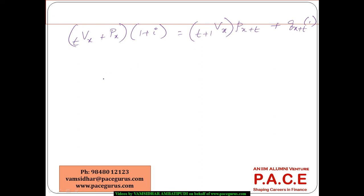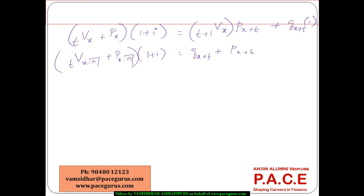This recursive relationship applies to almost all kinds of policies — endowment assurance, pure endowment, term assurance, and others. Once the reserve at the end of period T is known, we can comfortably compute the reserve expected at the end of T+1 without redoing the full first-principles calculation. This simplifies numerical computations considerably.